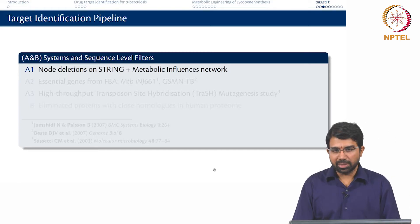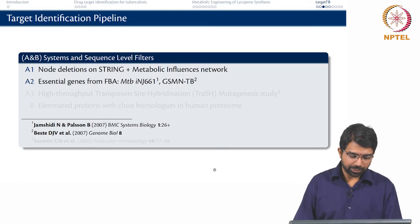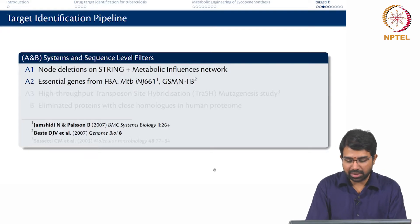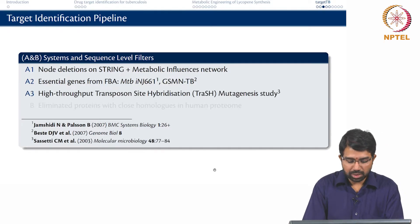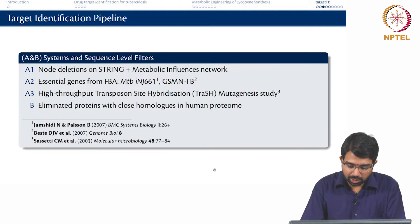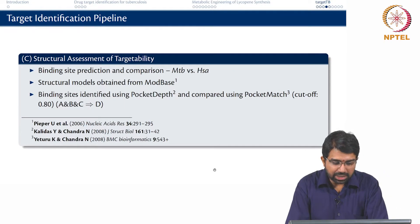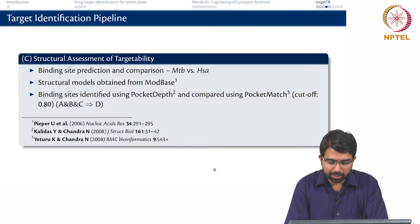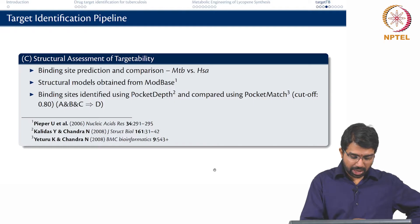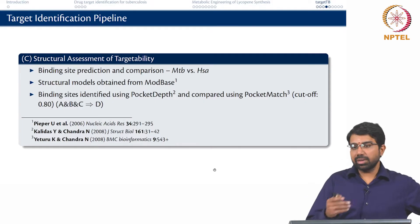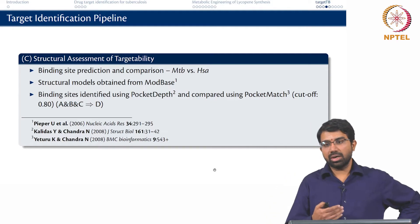STRING is a very popular database for protein interactions and functional associations. We used essential genes from two genome-scale models available at that time and also the high-throughput transposon study from the Sassetti paper, then eliminated proteins with close homologues in the human proteome. In the next step we did a structural assessment of targetability — predicting binding sites using tools known as PocketDepth and PocketMatch, developed in Professor Chandra's lab. We identified binding sites with a particular cutoff and eliminated proteins based on structural similarity.